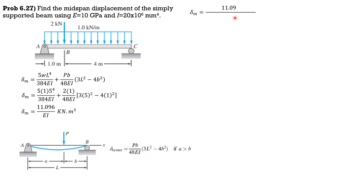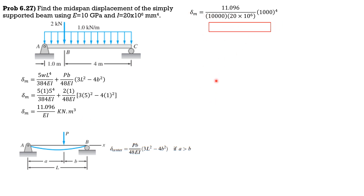Substituting values: 11.096 over E (10,000 MPa) times I (20 × 10⁶ mm⁴), multiplying by 1000⁴ to convert kN·m³ to N·mm³. Solving for delta M — the deflection at mid-span — it is 55.48 mm downward.